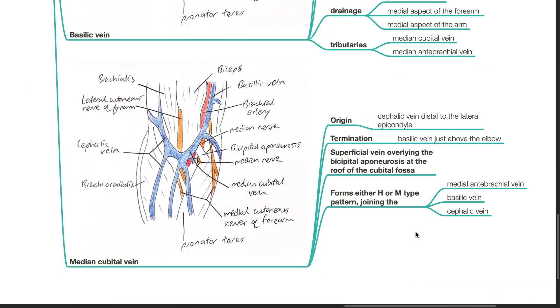The median cubital vein originates from the cephalic vein distal to the lateral epicondyle and terminates in the basilic vein just above the elbow. It is a superficial vein overlying the bicipital aponeurosis at the roof of the cubital fossa. It forms either a H or M type pattern joining the median antebrachial vein, basilic vein and cephalic vein.